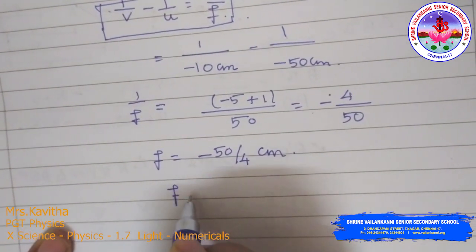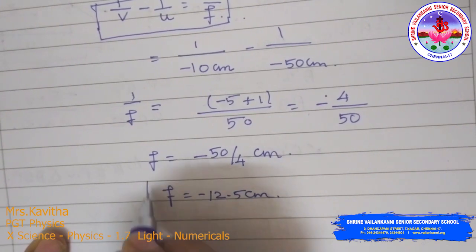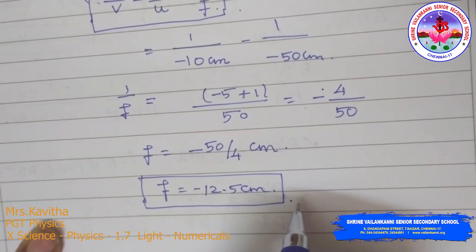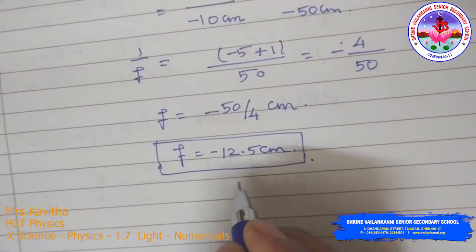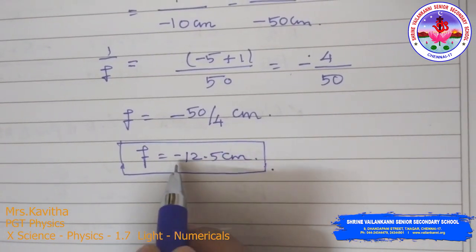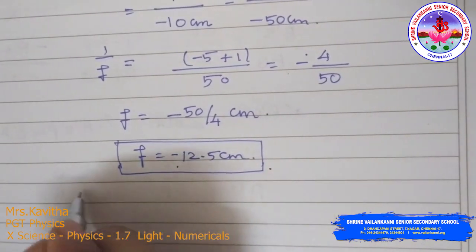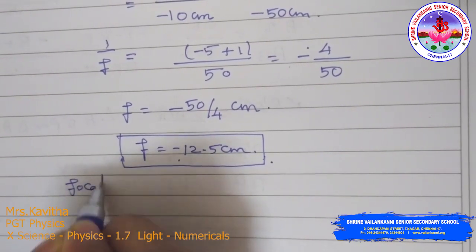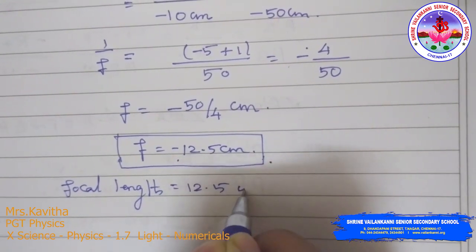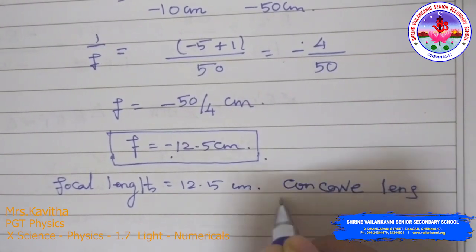When you calculate this, F = −12.5 cm. By this value you should understand: the focal length is 12.5 cm and the negative sign indicates it is a concave lens. So the focal length is 12.5 cm and the lens is a concave lens.